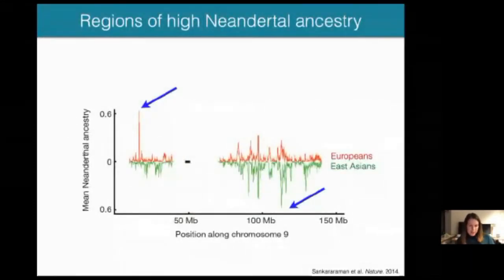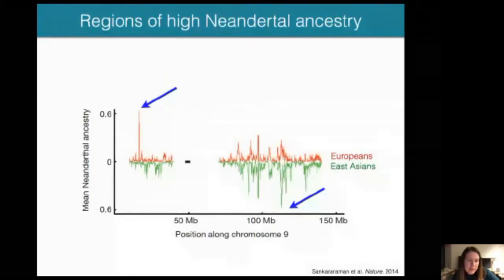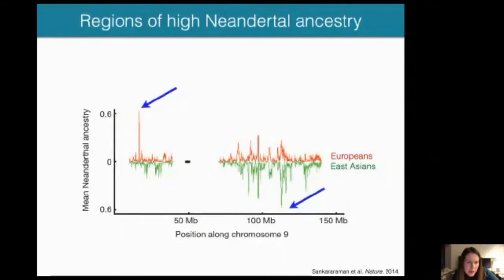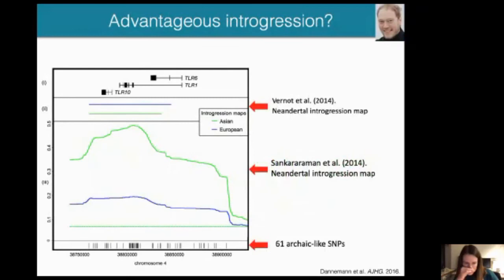Despite quite extensive selection against Neanderthal DNA in European and Asian genomes, we do find some regions where many individuals carry Neanderthal alleles. Looking at mean Neanderthal ancestry in Europeans and East Asians, the pattern is quite uneven — for example, 60% of Europeans carry Neanderthal alleles in one region but rather a low proportion of East Asians do, and some regions appear more East Asian-specific. Some of these regions are probably consistent with positive selection on Neanderthal DNA in modern humans — the other side of the coin, where Neanderthal DNA can have been positively selected and may have been advantageous.